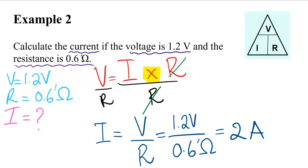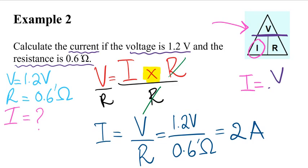There is another trick we can use to figure out which formula to use — the triangle method. We're solving for I in this example. I is right here. I equals — we see voltage V is at the top of the line and R is at the bottom — so we simply copy this as I equals V over R.